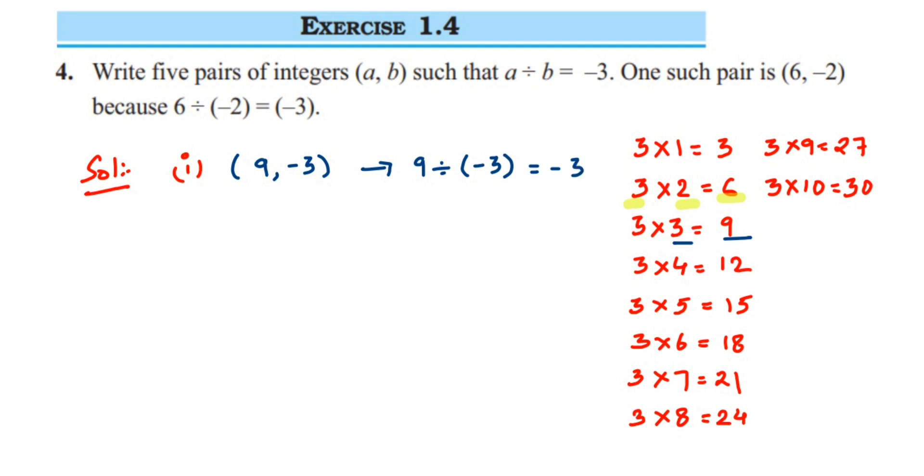The next pair I'm going to take is 15 and 5, so the next pair is (15, -5) because 15 divided by -5 equals -3.